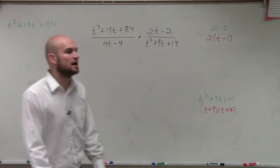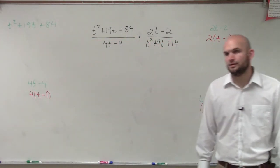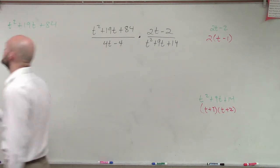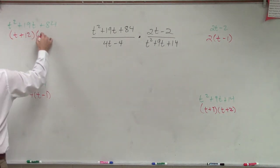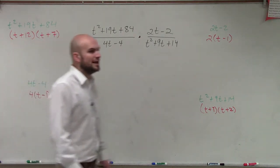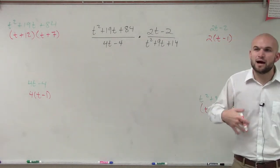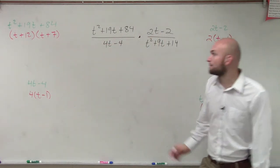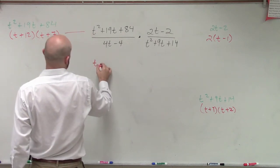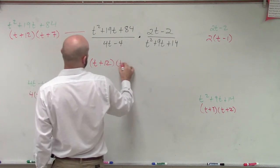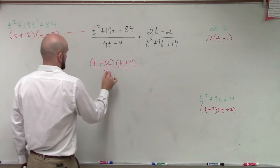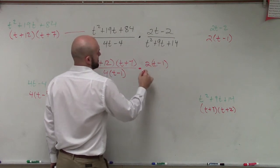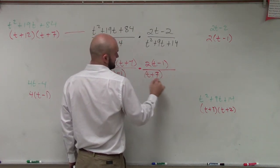Then, how about this one? t squared plus 19t plus 84. What two numbers multiply to give you 84, but add to give you 19? 12 and 7. Very good. So, not everything is always going to be factorable. But if you do have your factors, now what I'm going to want to do is rather than writing it out expanded, let's write it out as its factored form. So the first one is going to be t plus 12 times t plus 7. Over here, I get 4 times t minus 1 times 2 times t minus 1 divided by t plus 7 and t plus 2.